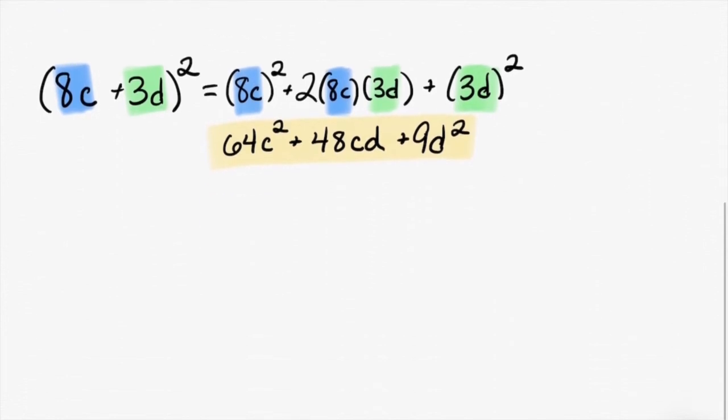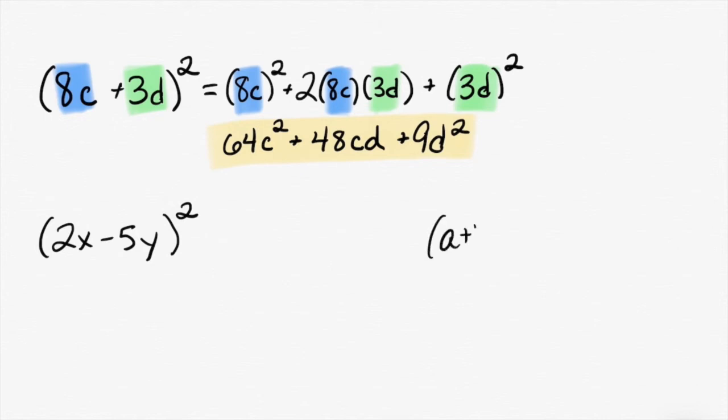What about if there's a minus sign? We also have a little shortcut formula for that one as well. It is exactly the same, except instead of plus 2ab, it's minus 2ab.